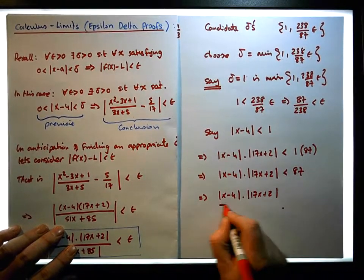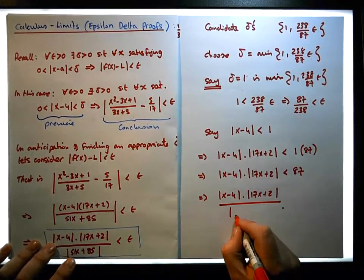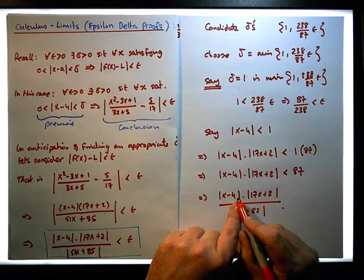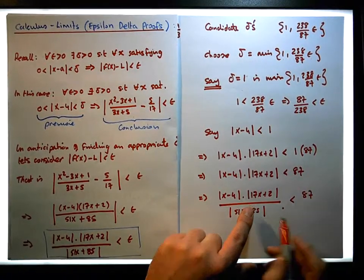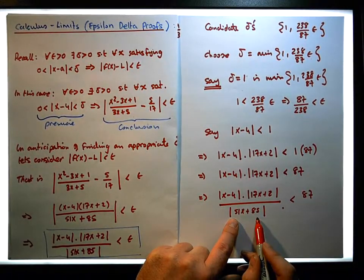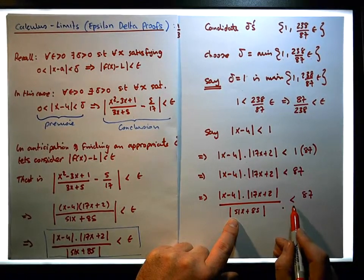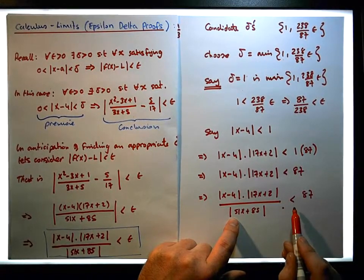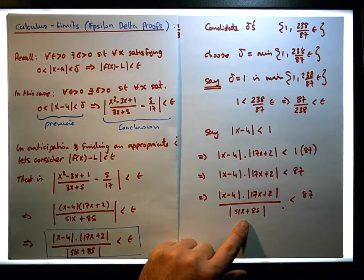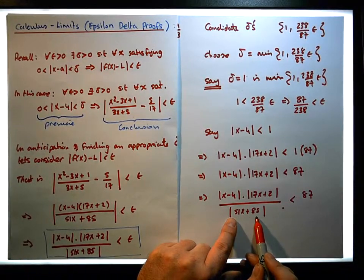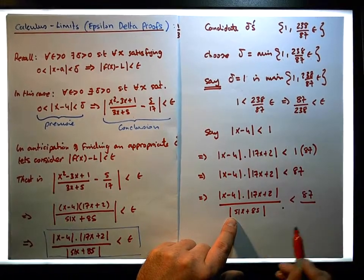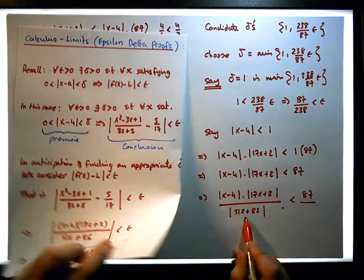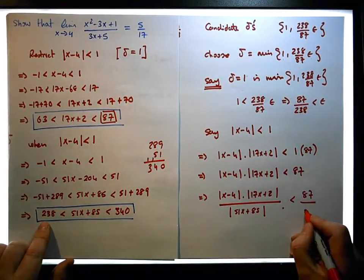If I take 17x plus 2 and divide by the absolute value of 51x plus 85, I know that the numerator is less than 87. But I'm dividing by 51x plus 85 now, so how do I make this less-than inequality continue to be satisfied? Well, if I divide by a number that's smaller than 51x plus 85, this will be satisfied. And we do have a number smaller than 51x plus 85 — it's 238.